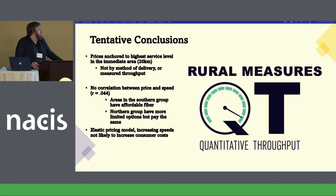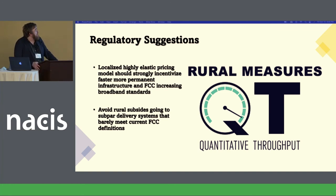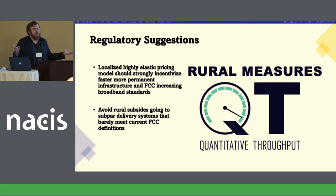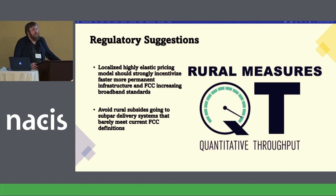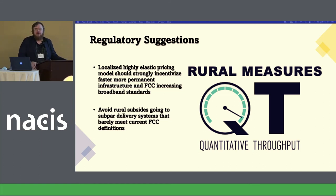Increasing speeds is not likely to increase consumer costs. Localized, highly elastic pricing models should strongly incentivize faster, more permanent infrastructure, and FCC increasing broadband standards. We should be directing subsidies this way. We should also avoid rural subsidies going to subpar delivery that barely meets current FCC definitions — there's a whole cottage industry of terrestrial wireless and satellite providers who barely meet the rural broadband threshold just to get subsidies. Those are not permanent solutions. This model strongly suggests we should be looking for things like fiber that are more long-term.